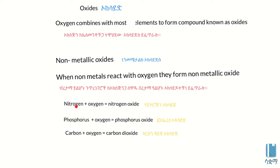Nitrogen reacts with oxygen to form nitrogen oxide. Phosphorus reacts with oxygen to form phosphorus oxide. Carbon reacts with oxygen to form carbon dioxide. These are specific examples of how non-metals form oxides.